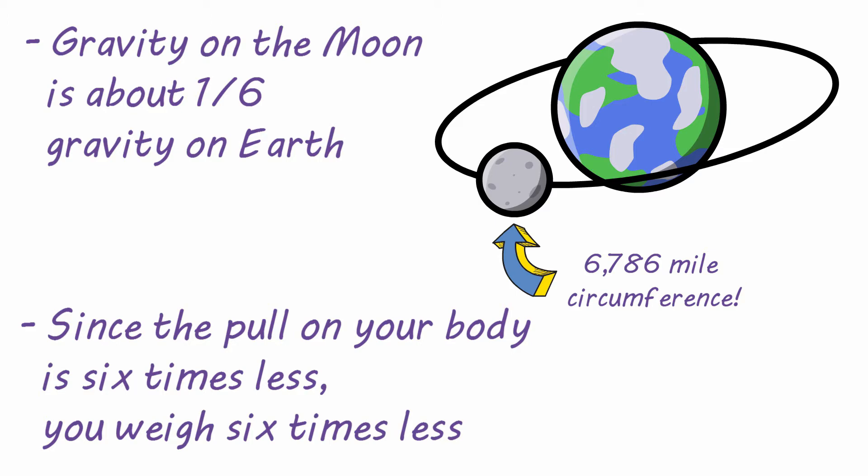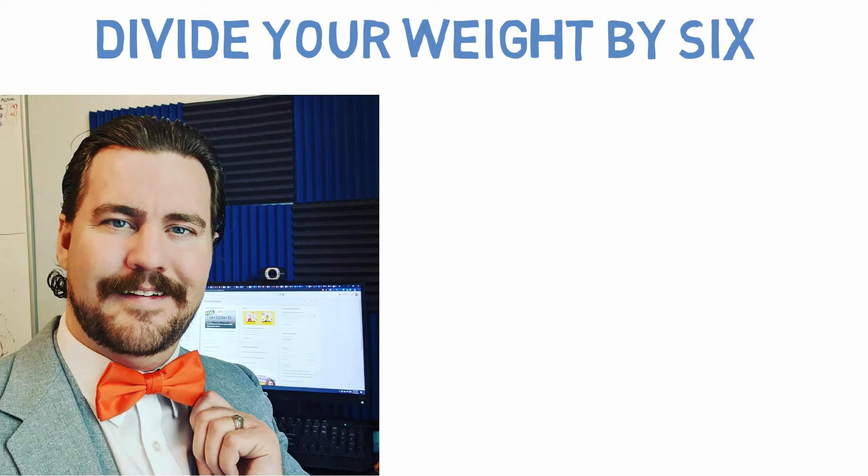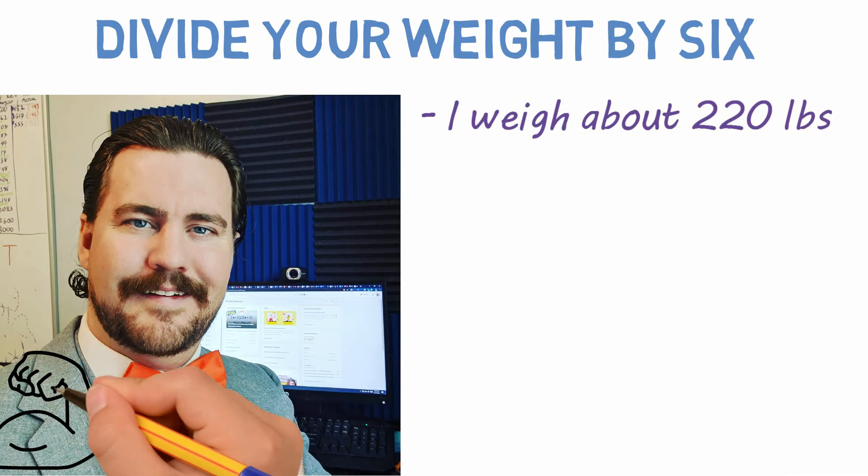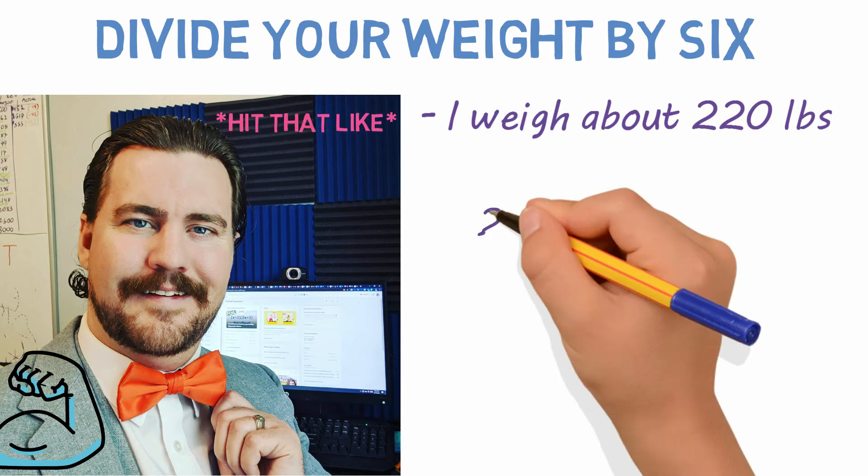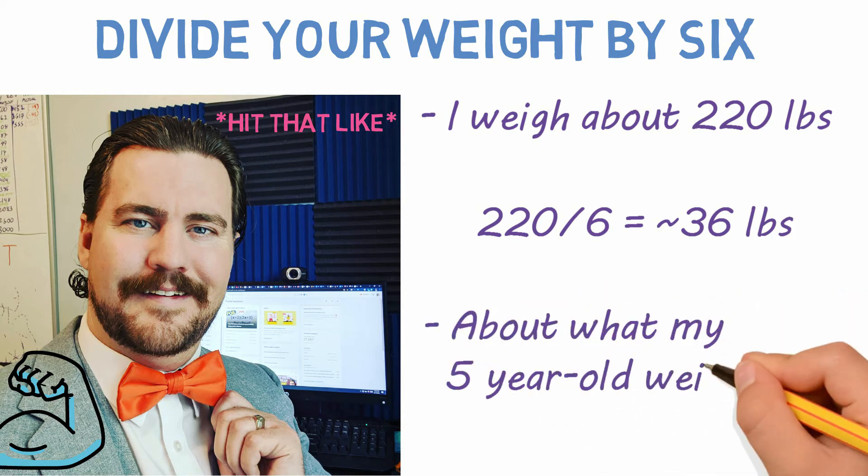So, to find out how much you weigh on the moon, just divide your weight by six. I'll use myself as an example. I weigh about 220 pounds—pure muscle, of course. 220 divided by six equals a little over 36 pounds, which is about what my five-year-old daughter weighs.